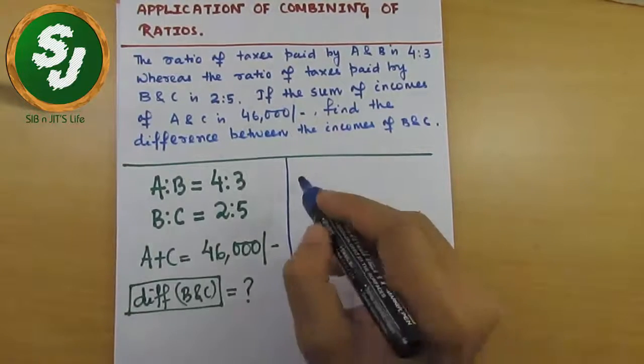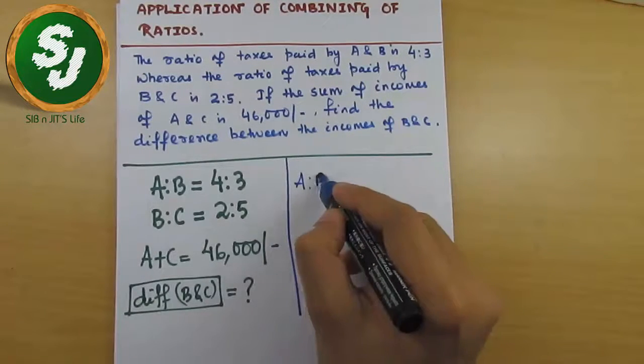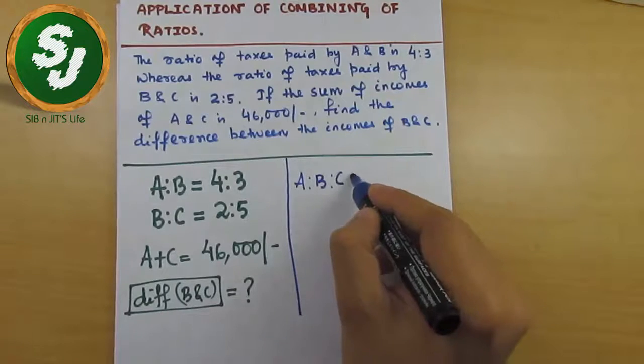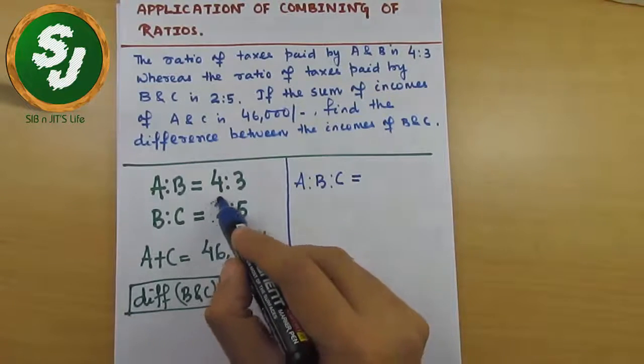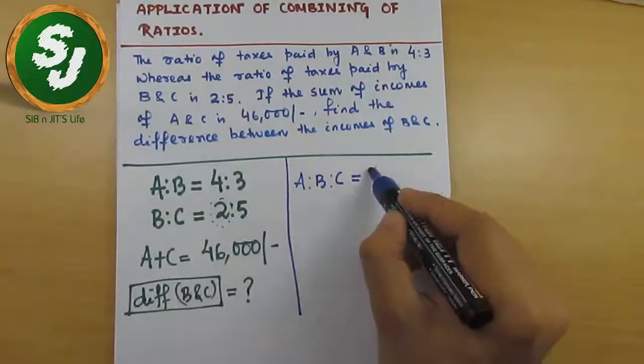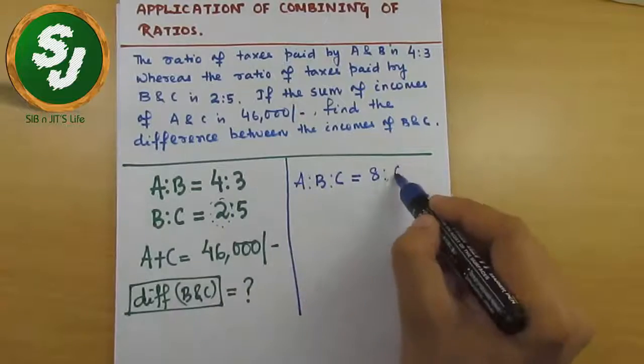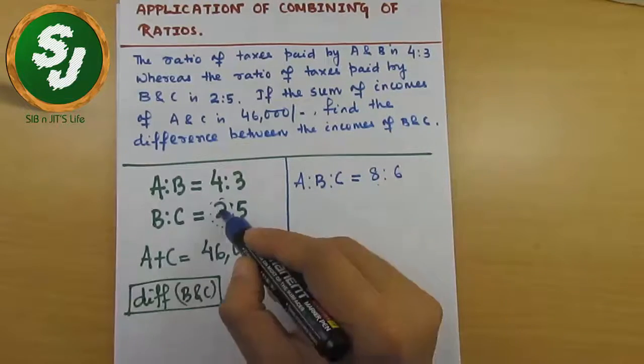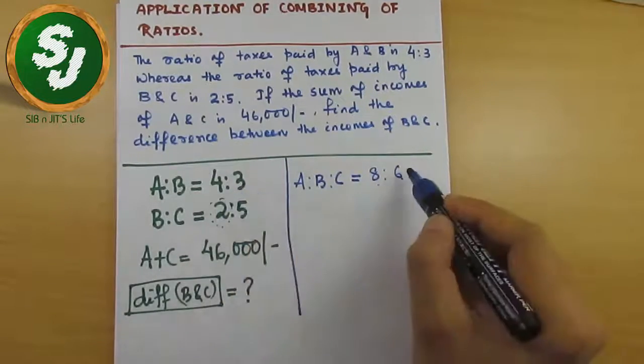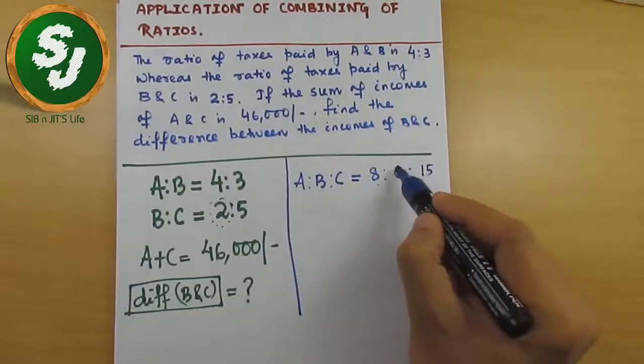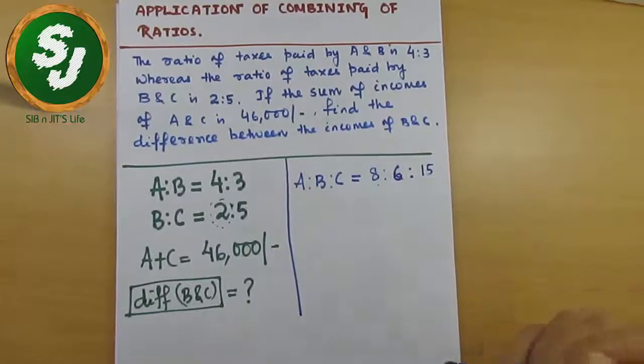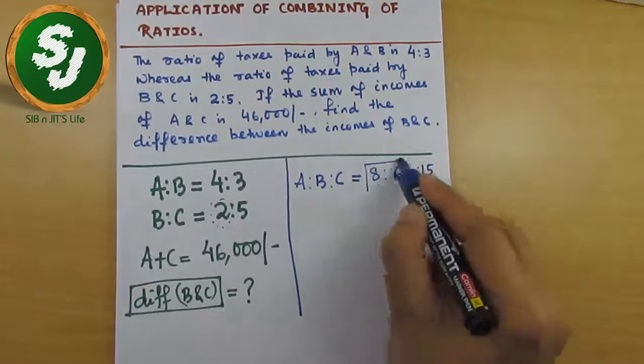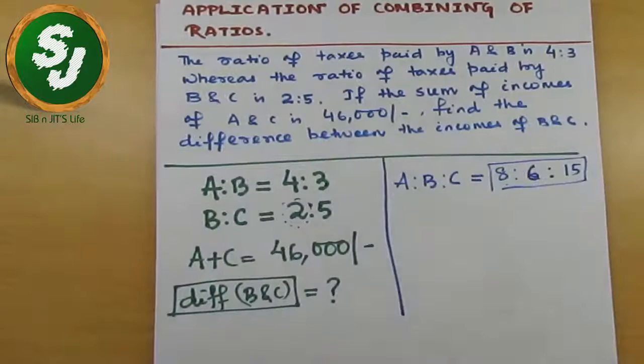So A:B:C—quite promptly, 2 multiplied with each term gives 8:6:15. Two into 4 is 8, 2 into 3 is 6, then 5 into 3 is 15. So 8:6:15 is A:B:C. Now this is the ratio. Next step, directly write using the shortcut K concept.